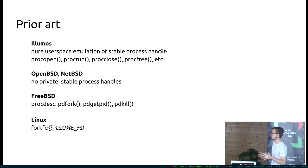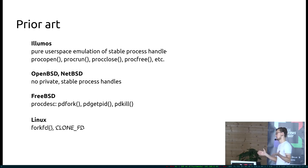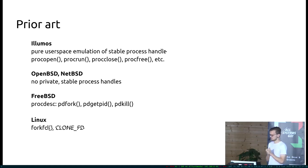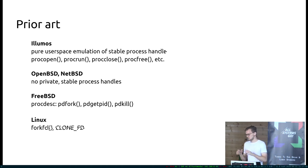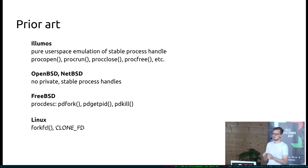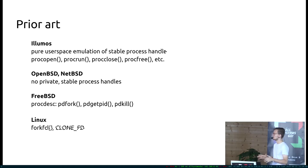pdfork gives you a proc file descriptor. pdgetpid allows you to translate it to a PID, and pdkill is used to send a signal through one of those file descriptors. On Linux there were multiple prior approaches: fork_fd and clone_fd — none of those made it. I think clone_fd tried to do too many things at once: mixing auto-reaping semantics with file descriptors for processes and so on. A lot of contention on how to do this correctly, and ultimately it didn't go in because it tried to do too much at once.